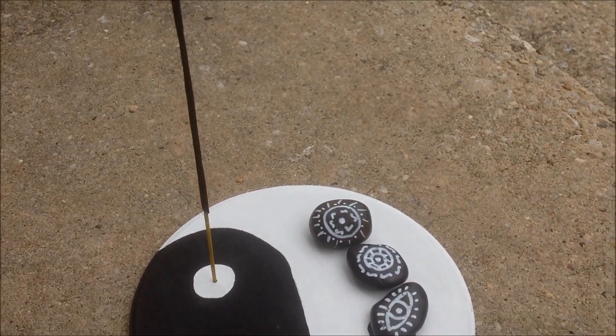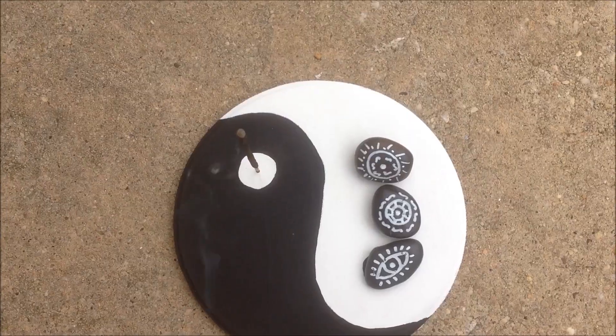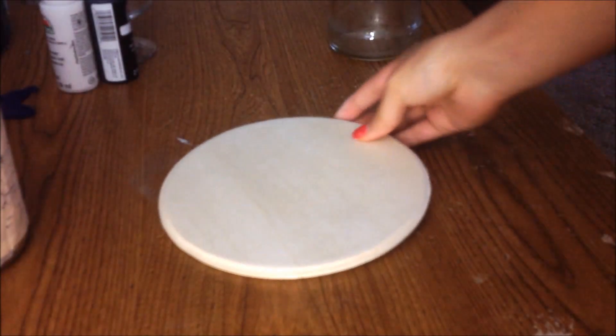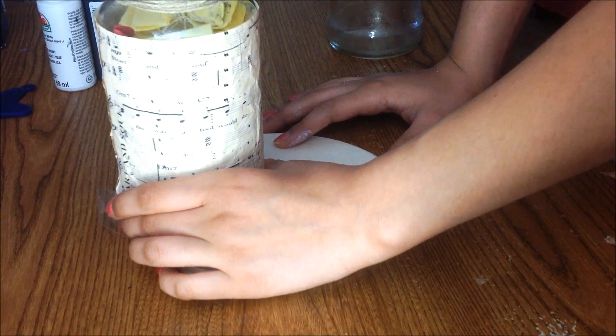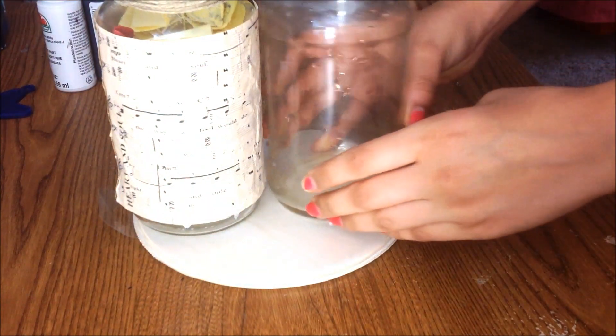For our next DIY, we're going to make this really cool yin-yang incense holder inspired by Anthropologie. You're going to need a wooden circular pot that I simply got for $0.97 at Walmart.